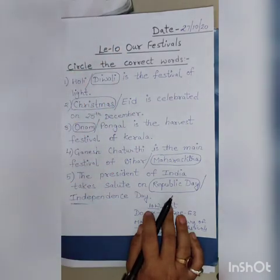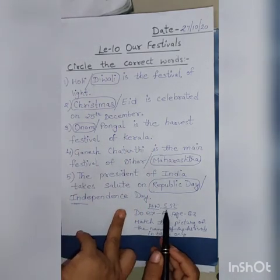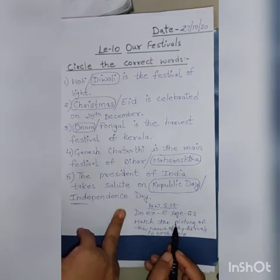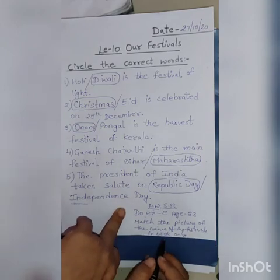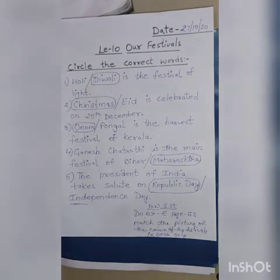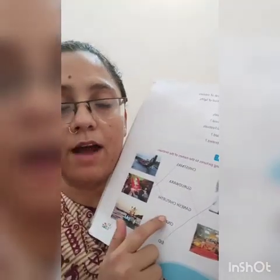I hope this is clear to you all. I am giving you the homework. Your homework is to do exercise E, page number 63 — match the pictures to the names of the festivals. You have to do this exercise in your book only. On page number 63 it is given in the book. You don't have to write it in your copies, you just do it in the book only. Thank you.